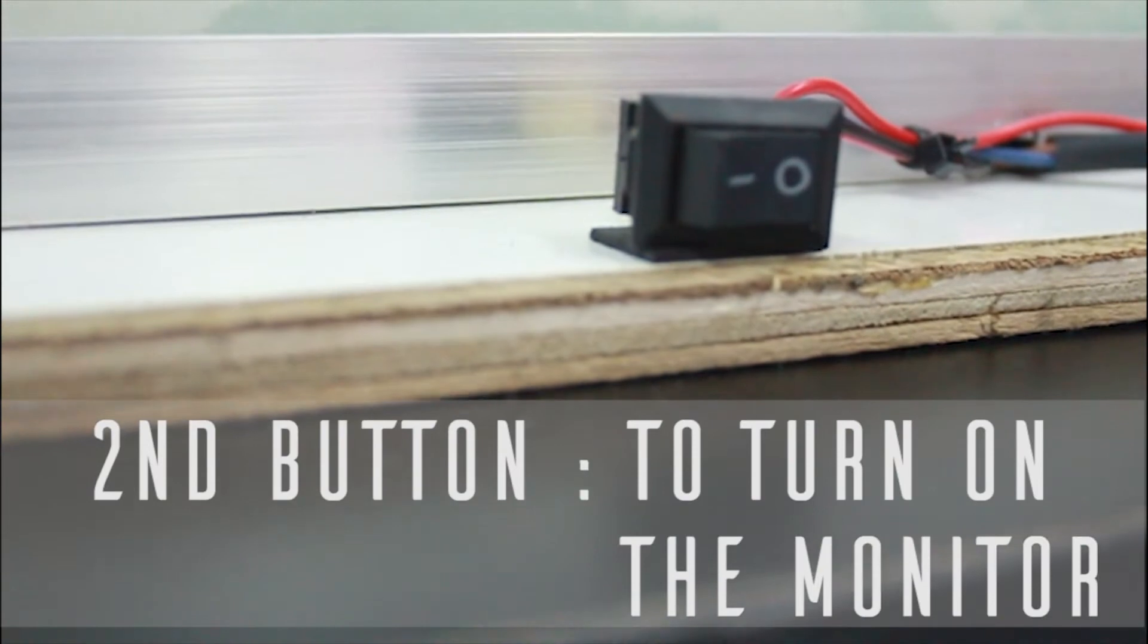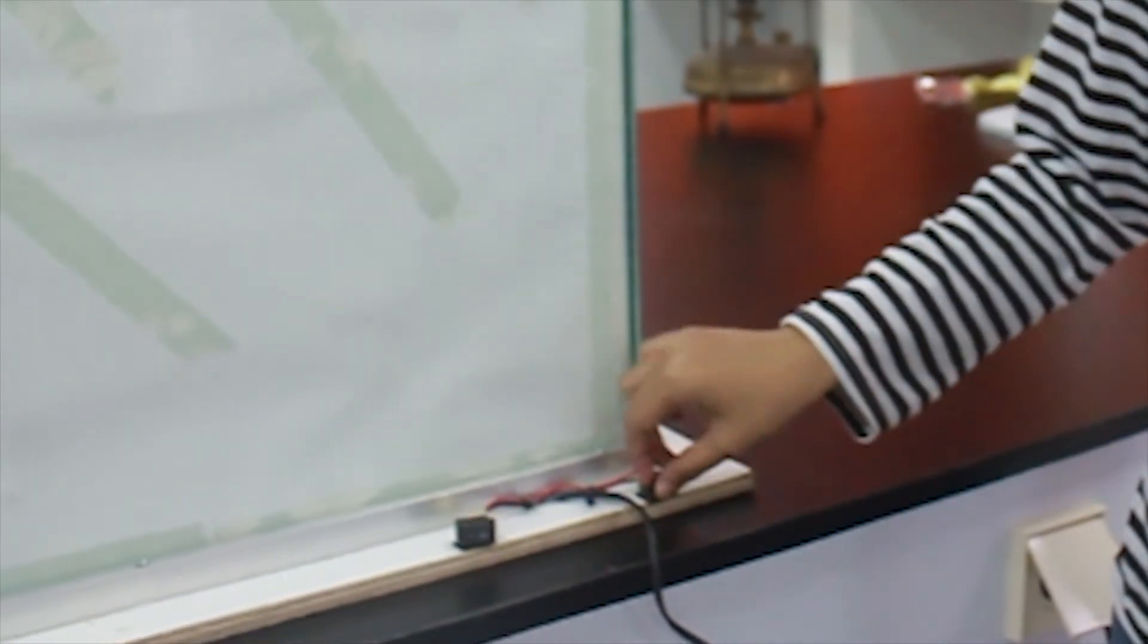And the second button is to turn on the monitor. Now, we turn on the monitor first, and we turn on the Earth layer model light.